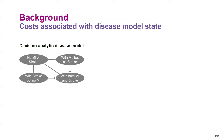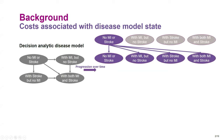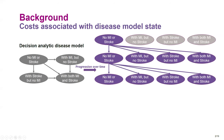Everyone is familiar with decision analytic disease models, which we can represent using Markov models. Here we have four states: no MI or stroke, with MI but no stroke, with stroke but no MI, and with both MI and stroke. People can move between these states or remain in their current state each cycle.